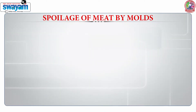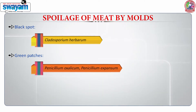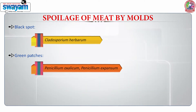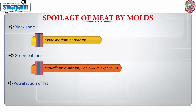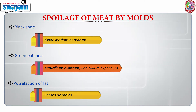When we talk about the spoilage of meat by molds, we can also see various types of discolorations. For example, we can see black spots which are due to Cladosporium herbarum, and green patches, which are usually by the growth of Penicillium species such as Penicillium expansum and Penicillium oxalicum. Even in case of meats, we see putrefaction of fat which is due to lipases or by the action of lipases produced by mold species.